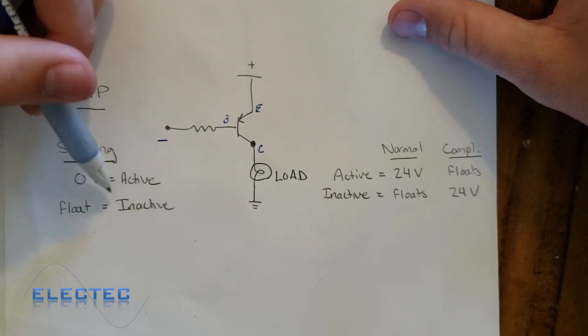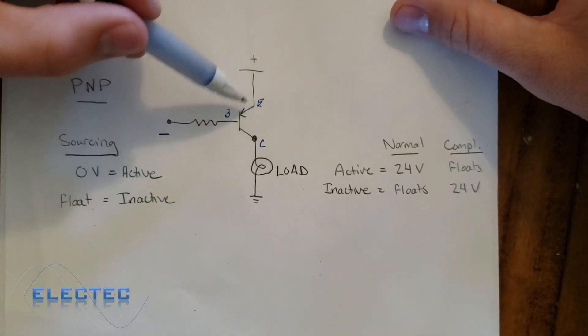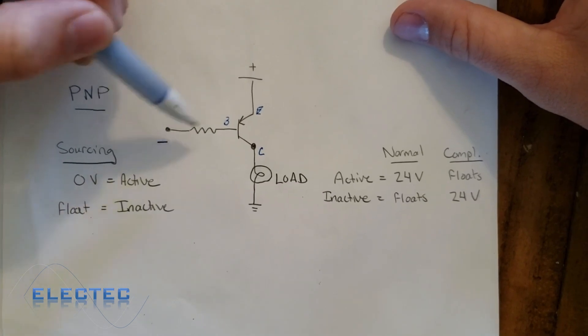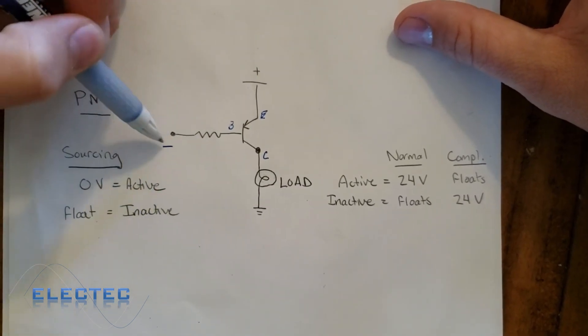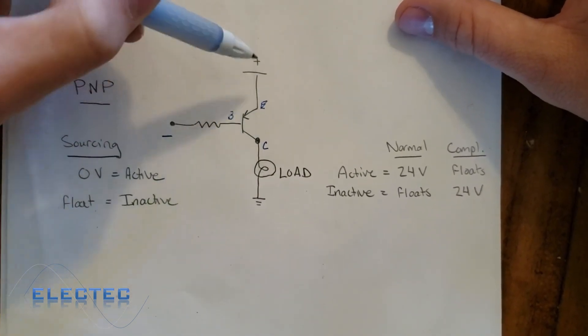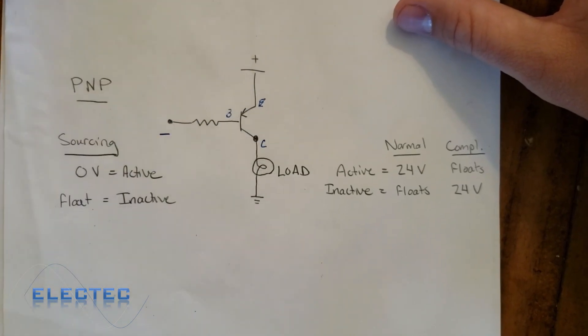So again, when we activate this transistor, because the transistor is sourcing, we have to sink that source. So we sink it, but the transistor is sourcing, and it sources the voltage potential.